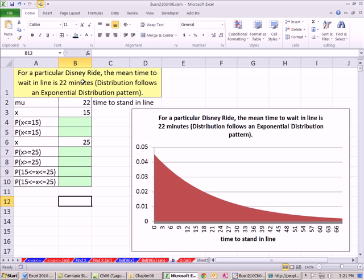So here, for a particular Disney ride, the mean time to wait in line is 22 minutes. So on average, 22 minutes. Distribution follows an exponential pattern. Now that kind of makes sense, right? The mean is somewhere right in here. And as the time gets longer and longer, you can imagine that the probability out here is going to be much less. Probability early and before 22 minutes is going to be greater.